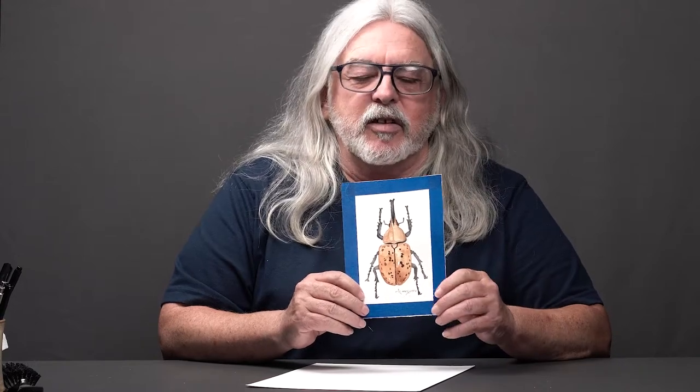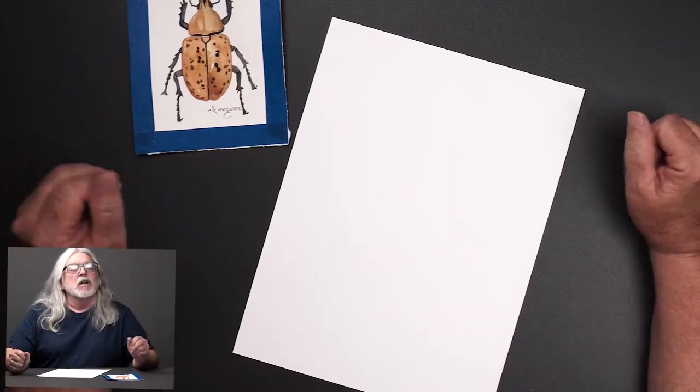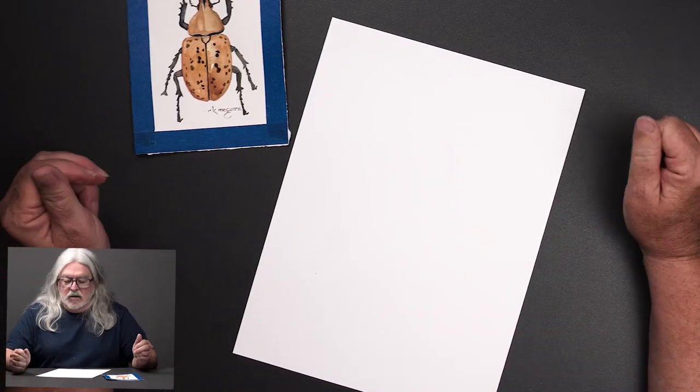The other part of this is getting our shapes right by using guidelines. So I'm going to go ahead and get started. Can we see our bug? You can see the bug now.